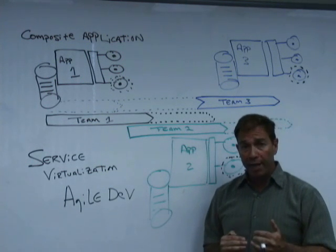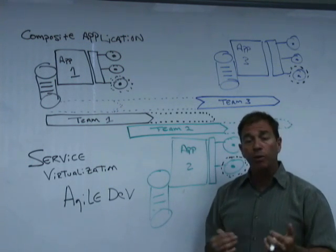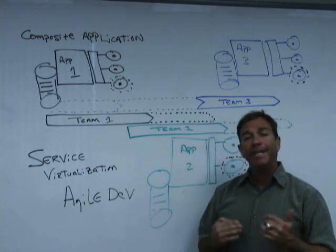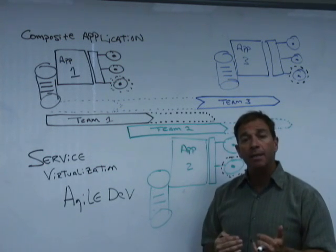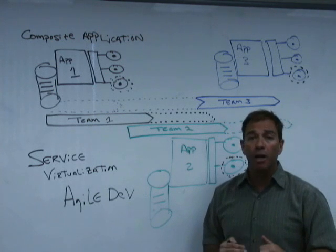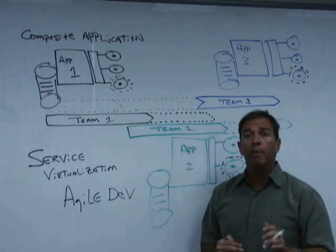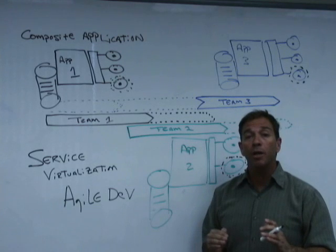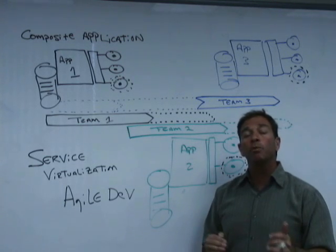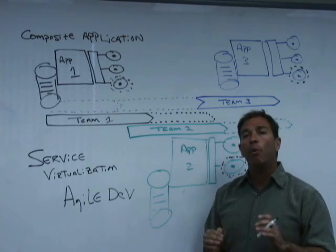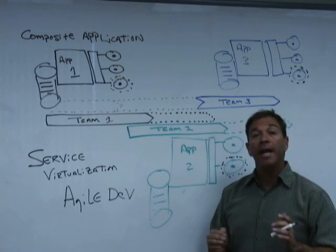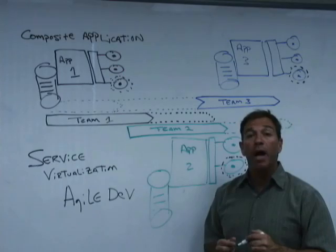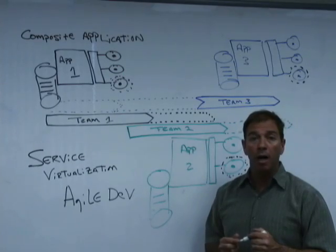If you are using agile, or you are in an agile environment with a composite or service-oriented architecture and you need to test against multiple dependent systems, you should look up Parasoft Virtualize. It is the answer to the problem of constraints associated with multiple streams and multiple teams delivering endpoints at different points in time. Look up Parasoft Virtualize at www.parasoft.com. Thank you.